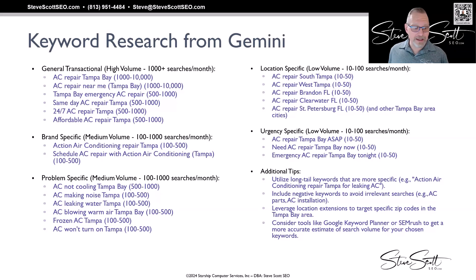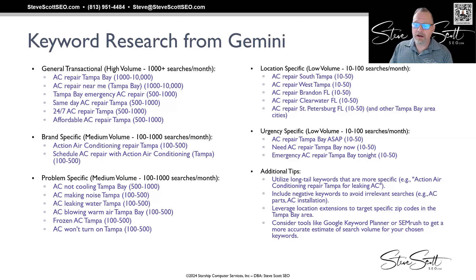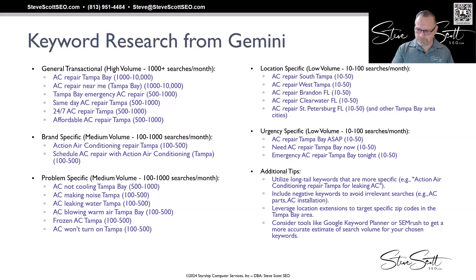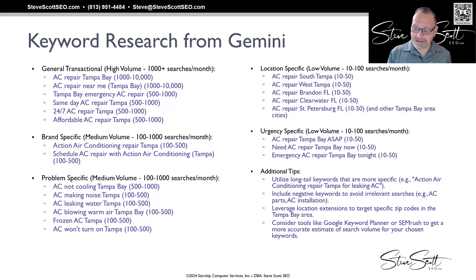Gemini also gave brand-specific words like 'Action Air conditioning repair Tampa' and 'schedule AC repair Action Air'; problem-specific keywords like 'AC making noise,' 'AC leaking water,' and 'AC blowing warm air'; location-specific results like 'AC repair South Tampa,' 'AC repair West Tampa,' and 'AC repair Brandon Florida'; and urgency-specific phrases like 'AC repair ASAP,' 'need AC repair Tampa Bay now,' and 'emergency AC repair Tampa Bay tonight.' It also provided tips: utilize long-tail keywords, include negative keywords to avoid irrelevant searches, leverage location extensions for specific zip codes, and consider tools like Google Keyword Planner and SEMrush.